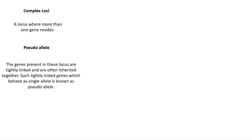Because they transmit to the next generation together, we thought these are alleles — but actually they are not alleles. They are so tightly linked that they behave as a single allele, but actually these are two different genes. We call such alleles as pseudo-alleles. Pseudo means false, so they are false alleles. We think they are alleles because they transfer to the next generation together, but actually these are two genes that are very tightly linked together.